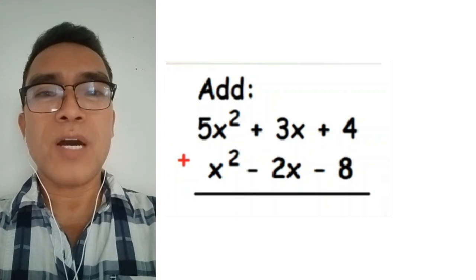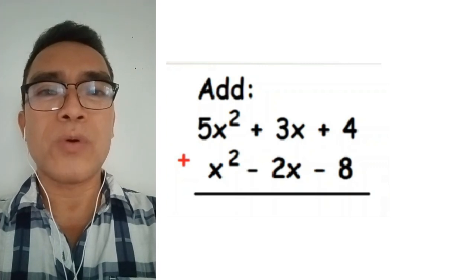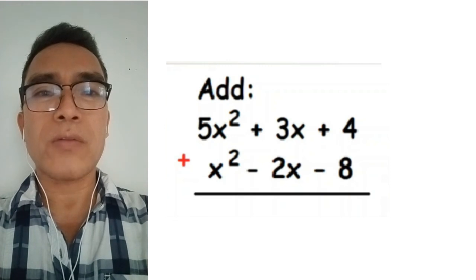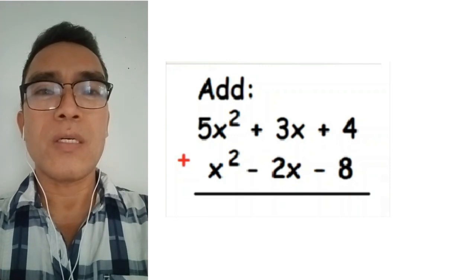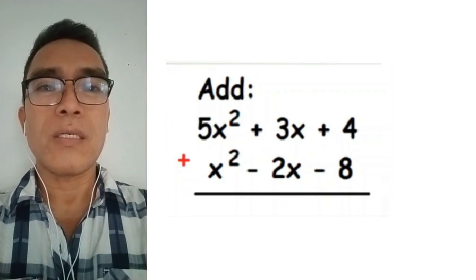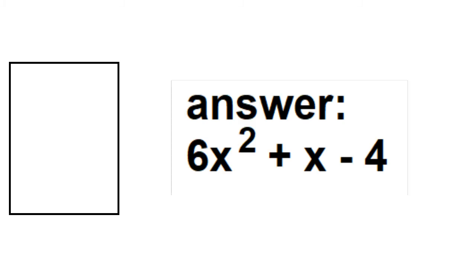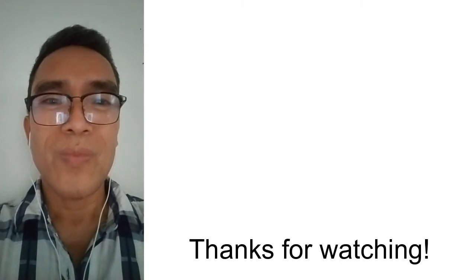Try this: add 5X squared plus 3X plus 4 and X squared minus 2X minus 8. Type your answer in the comment section. Thanks for watching.